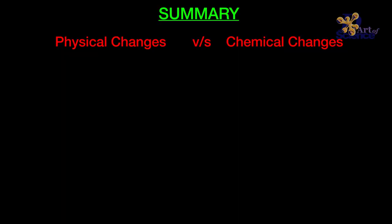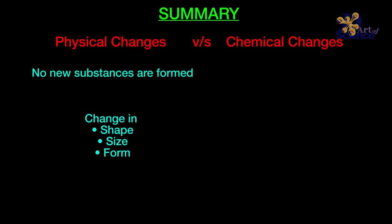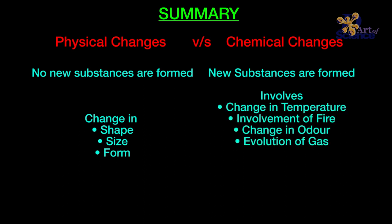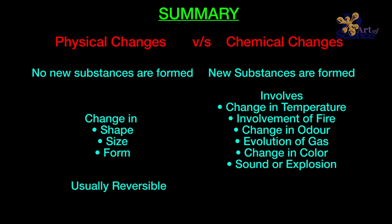A physical change involves a change in the physical form of a substance — like shape, size, or form. But in the case of a chemical change or reaction, new substances are formed, and this can be identified with clues that chemical changes leave behind: temperature changes, fire, change in odor, evolution of a gas, change in color, an explosion, and so on. Most physical changes are reversible, but all chemical changes are irreversible.